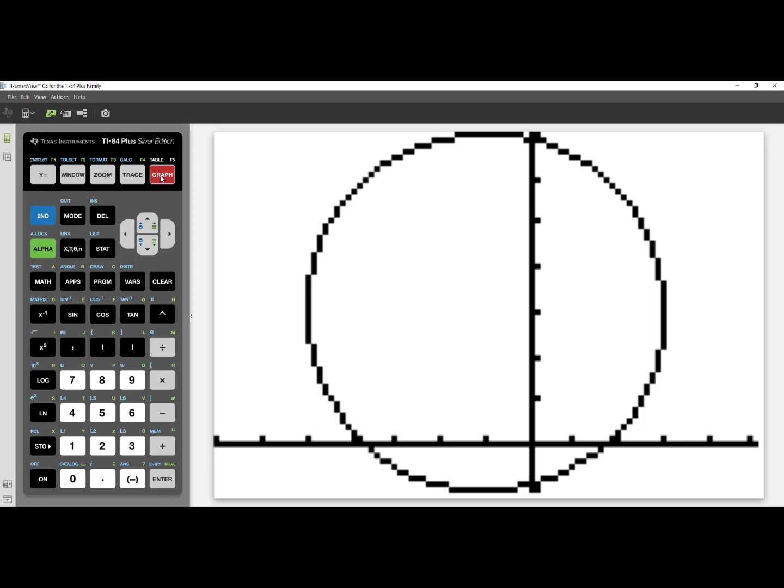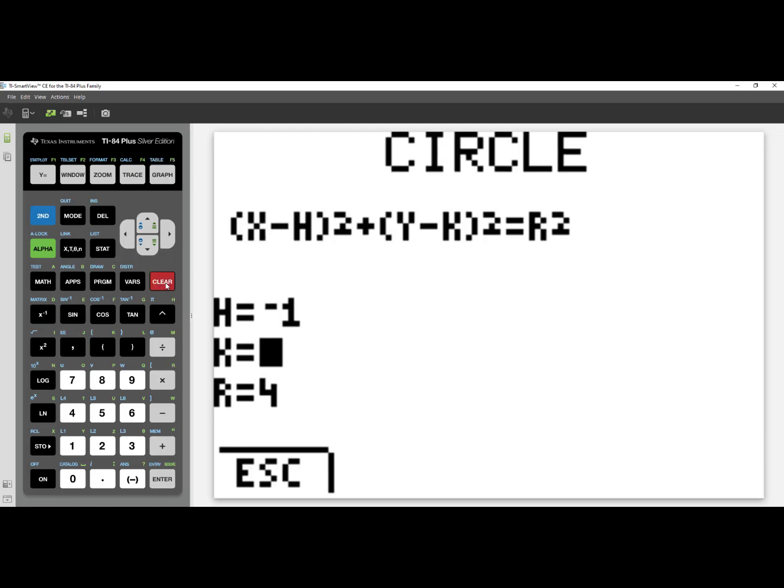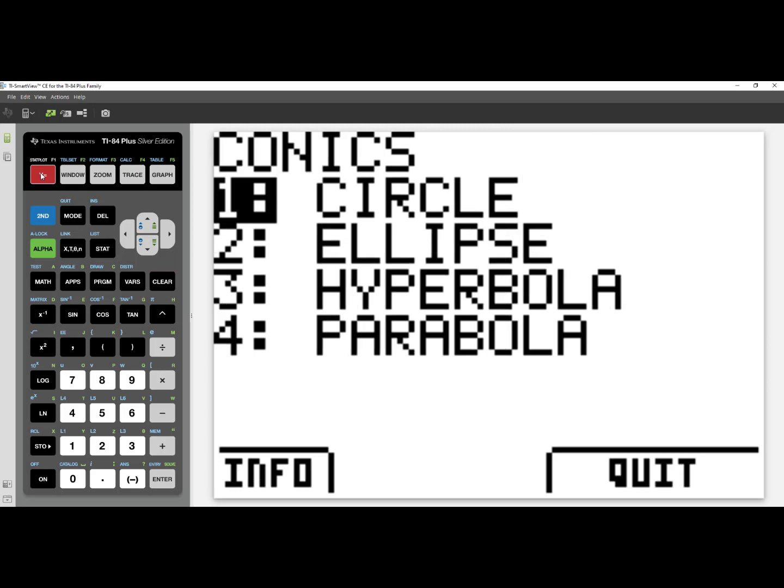I see the picture of a circle centered at negative 1, 3 that has a radius of 4. The conics app for the TI-84 Plus is very similar to that of the 84 Plus CE. You can use your y equals to escape, right back to the main menu,